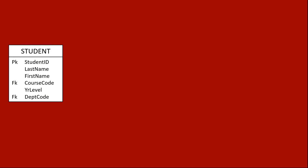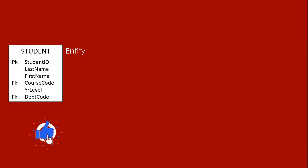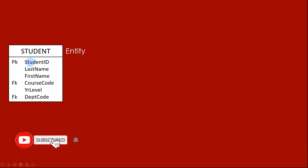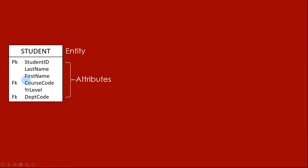Those attributes describe the student. So if you're going to create an entity using the crow's foot notation, we just use a square or box. On the top of this box is the entity name - in this case we have 'Student'. Then under the student we have the words that describe the student or describe the entity, which are the attributes.